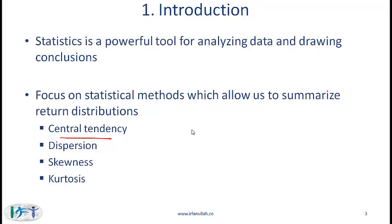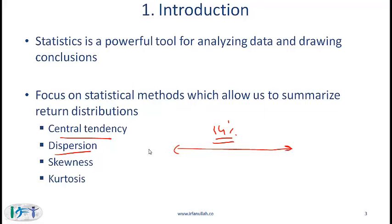For example, the stock market may have returned on average 14% over the last 10 years — that average number is what central tendency captures. We are also concerned with dispersion, which tells us how spread out the data has been. One of the simplest measures of dispersion is range. If over the last 10 years the stock market return ranged between minus 20% and plus 35%, that is also important for us to know.